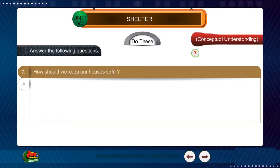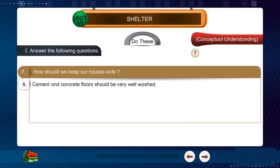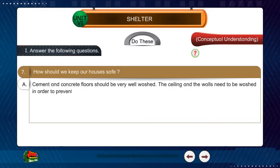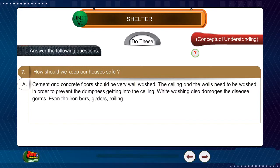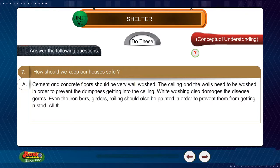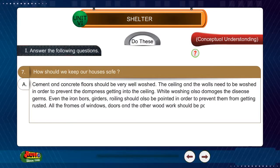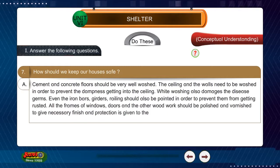Question 7: How should we keep our houses safe? Answer: Cement and concrete floors should be very well washed. The ceiling and walls need to be washed to prevent dampness. Whitewashing also kills disease germs. Iron bars, girders and railings should be painted to prevent rusting. All frames of windows, doors and other woodwork should be polished and varnished to give necessary finish and protection to the wood.